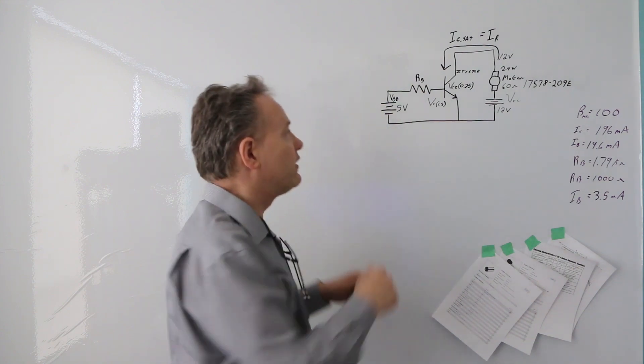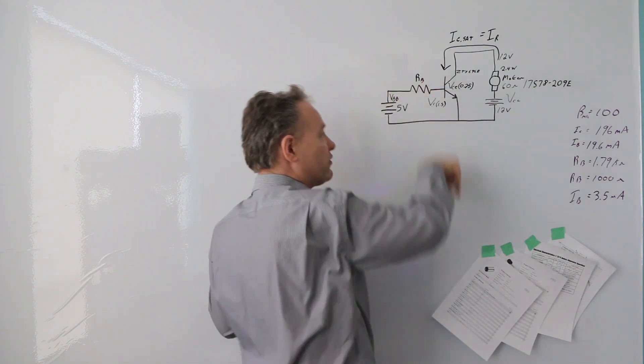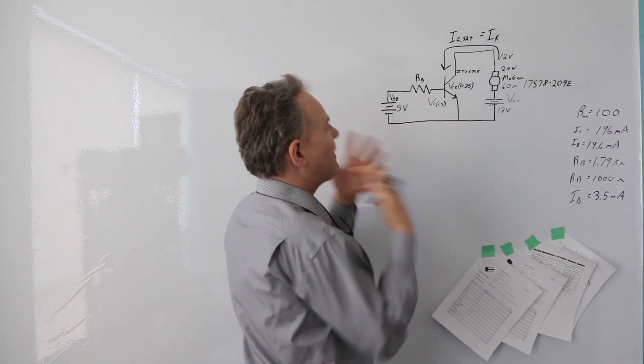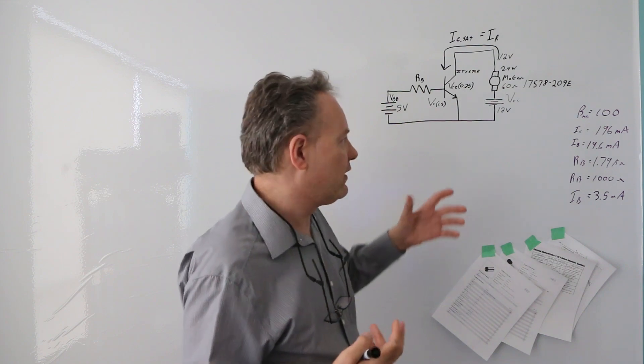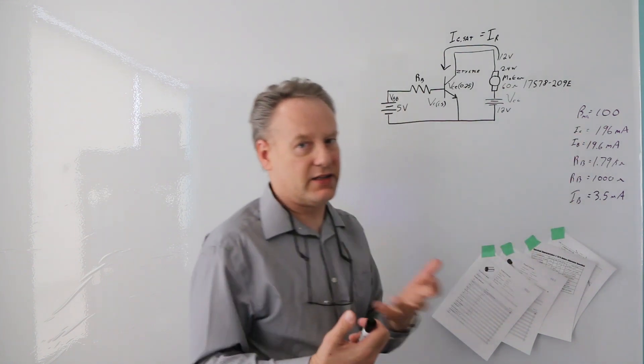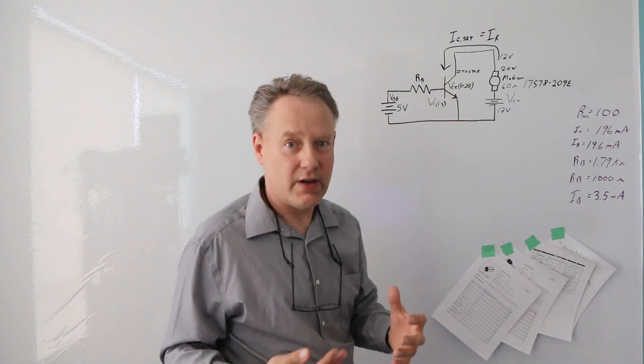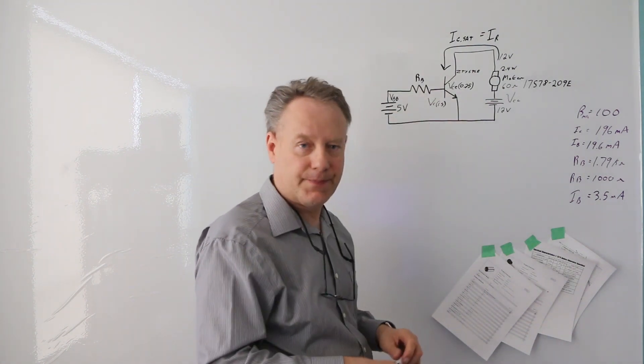To fully saturate it, we've got this current going through here, our base current, and it's going to be balanced to the point where we're going to put this gain into it. The gain is 100, but essentially the current that goes through here has to be one hundredth of the current going through the collector.